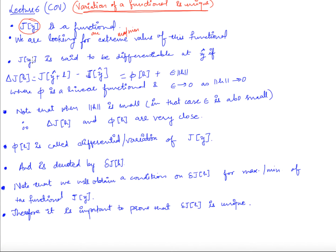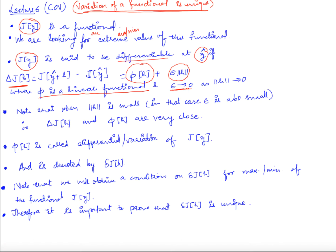In the last video we have seen that this functional j of y is said to be differentiable at a certain function y-hat if the change in the functional j — which is j computed at y-hat plus h, where h is some increment function, minus j computed at y-hat — can be written as some functional φ(h) plus ε times the norm of h, where φ(h) is a linear functional and ε goes to zero as the norm of h goes to zero.